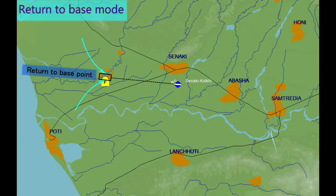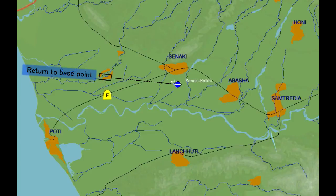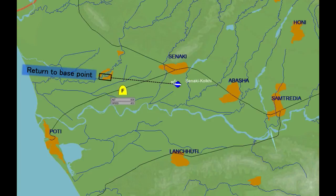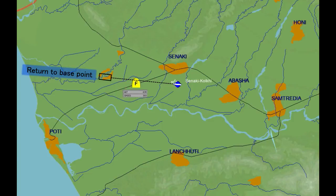If you find yourself in a situation where the instruments are taking you to the Return to Base point with a heading too far apart from that of the runway, it is of the utmost importance to have altitude and speed close to the assigned values for that waypoint, which usually means going low and slow. That way you'll be able to turn the aircraft and align it with the runway within the 17km segment between the Return to Base point and the runway.